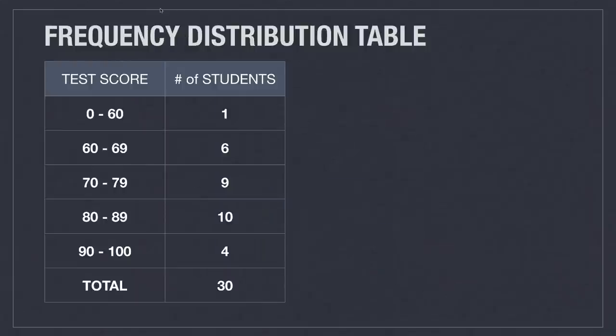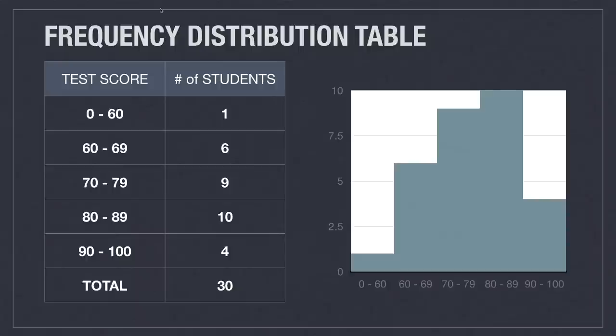A frequency distribution table focuses on the number of occurrences, or the frequency. Here we list a range of test scores and how many students scored in that range. A histogram differs from a bar chart in that histograms show the distribution of grades in a range versus using categories like we do with a bar graph. Also, histograms are drawn with the bars touching.